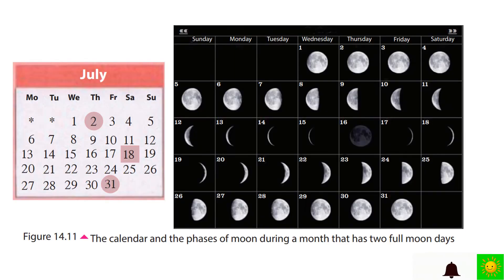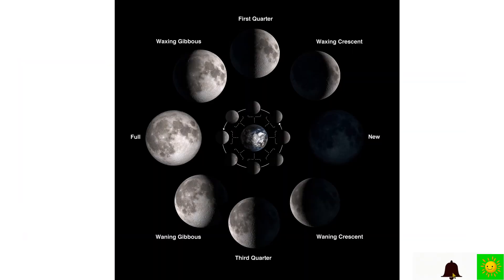In a calendar, there is only one full moon day for duration of one month, but sometimes very occasionally there are two full moon days for some months. Now you can see such a calendar and phases of moon during such a month. Here you can see how the phases of moon occur by studying this figure. You can get such idea.